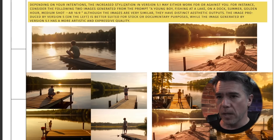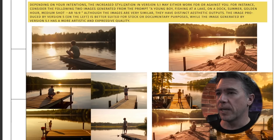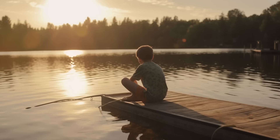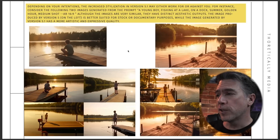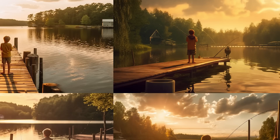Consider the following image with the simple prompt: 'a young boy fishing at a lake, on a dock, summer, golden hour, medium shot, AR 16:9.' Version 5 has a very nice photographic look — it would fit right in as a stock or documentary image — whereas version 5.1 is a lot more stylized, looks like it's been through Photoshop a few times, and one of the outputs has more of an illustrative style to it.